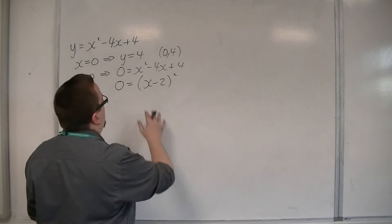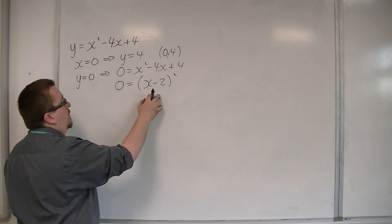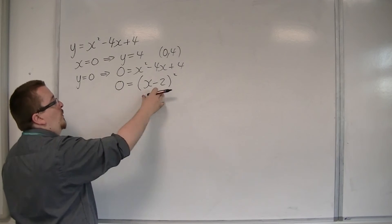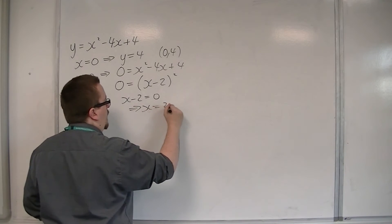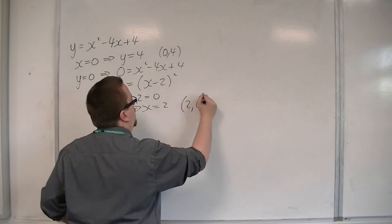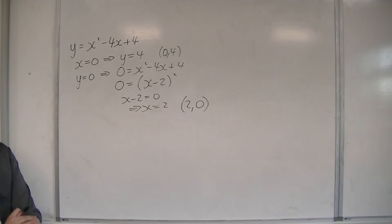Now, when is this equal to 0? Well, that would be when x is 2, when x minus 2 is 0. So the fact is that we only have one coordinate of where it's crossing the x-axis.